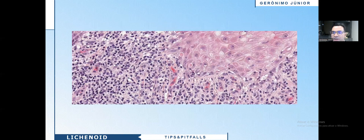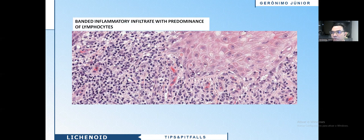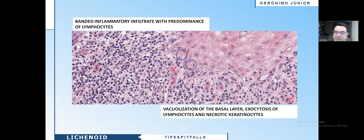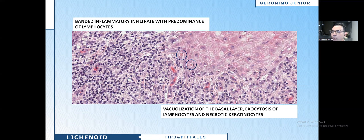At higher magnification, we see a dense, intense inflammatory infiltrate with predominance of lymphocytes. There is vacuolization of basal cells, and we see many necrotic keratinocytes. So you are facing a lichenoid dermatitis with clinical and morphological features compatible with lichen planus. That is my diagnosis.